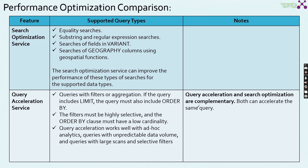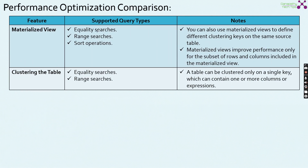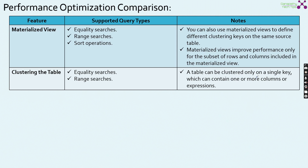For materialized views, you can use them for equity searches, range searches, and sort operations — and you can define different clustering keys on the same source table via materialized views. However, materialized views improve performance only for the subset of rows and columns included in the view. For clustering, a table can have only one clustering key, but that key can be a composite key containing one or more column expressions.